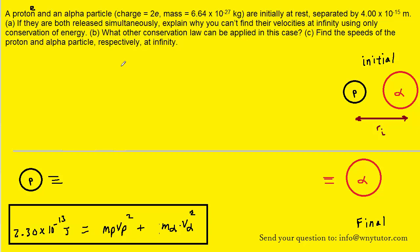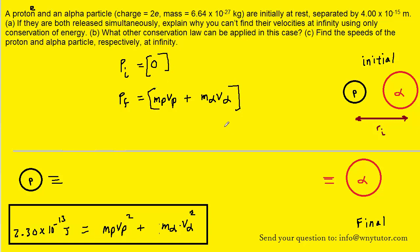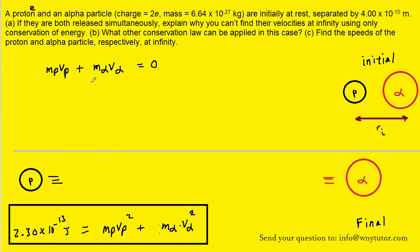Initially, the particles are at rest, so the initial momentum equals zero. After they fly apart, the final momentum is the mass of the proton times the velocity of the proton, plus the mass of the alpha particle times the velocity of the alpha particle. Through conservation of momentum, we set initial momentum equal to final momentum.